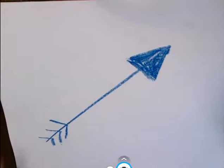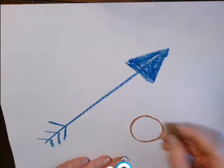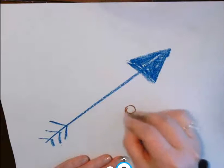Alright, now that I have made my arrow, I think I am going to make a paw print. So I am going to put a circle and I am going to give them some little paws.